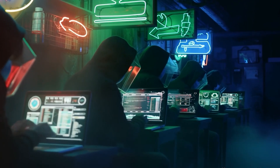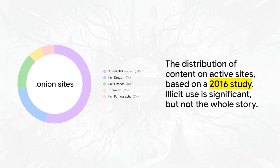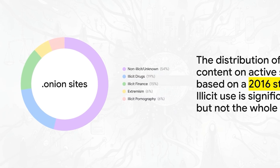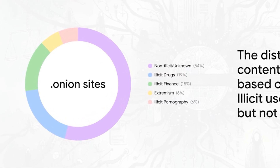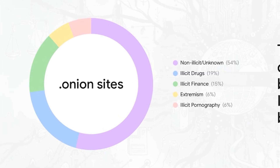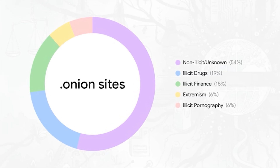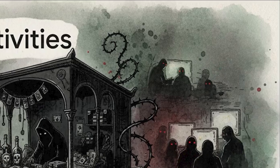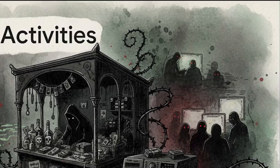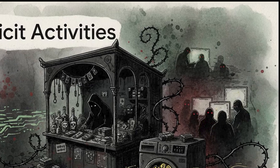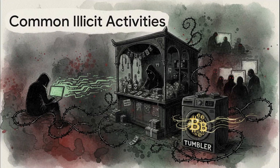What is all this privacy actually being used for? Let's start with the dark side. A 2016 study gives us a fascinating peek — there's a big chunk of sites used for bad stuff: drugs, sketchy financial services, extremism, and so on. But the biggest slice of the pie — over 40% of sites — was categorized as non-illicit or just unknown. So while the criminal element is absolutely real, it is clearly not the whole story. Those illicit activities include huge online black markets like the famous Silk Road, stolen data from hacks, hacking services, and Bitcoin tumblers used to launder money.